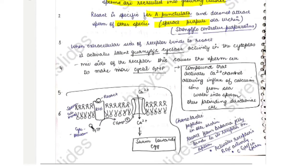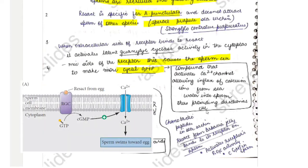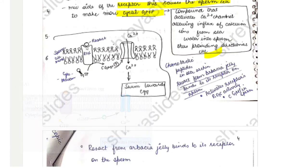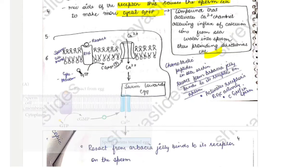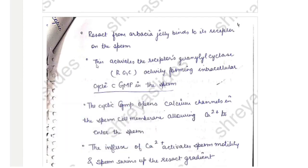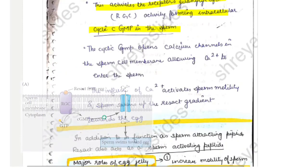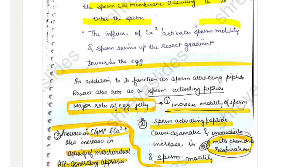When the extracellular side of the receptor binds to resact, it activates latent guanylyl cyclase (RGC) activity on the cytoplasmic side of the receptor. This causes the sperm cell to produce more cyclic GMP (cGMP). Cyclic GMP activates calcium channels, allowing influx of calcium ions from seawater into the sperm. This influx of calcium activates sperm motility and the sperm swims up the resact gradient towards the egg.